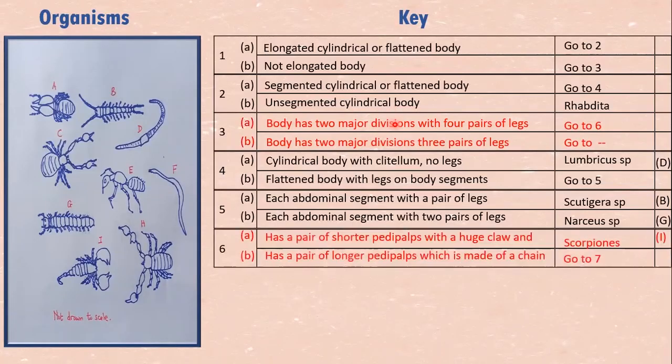So we are going to go to box six to be able to sort this group out. Body has two major divisions with four pairs of legs, go to six. So six, we are going to sort C, H, I out. They are the ones that have two body divisions with four pairs of walking legs.